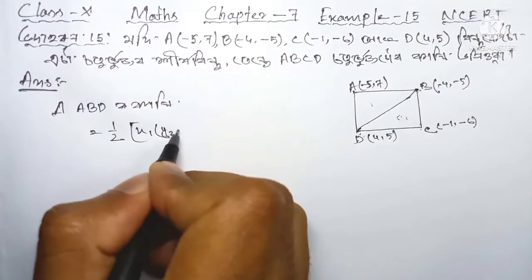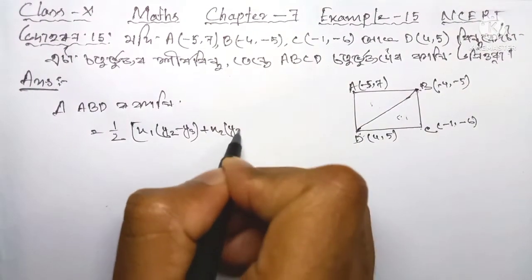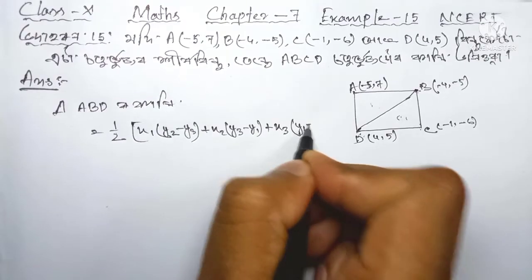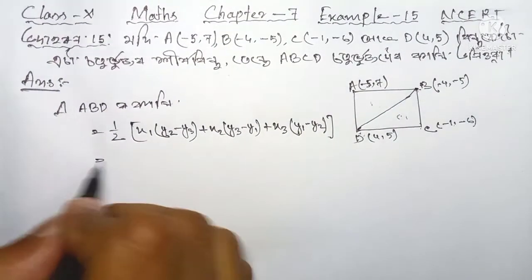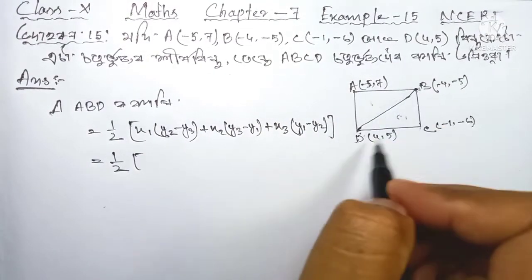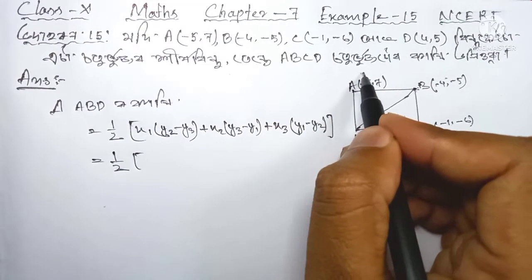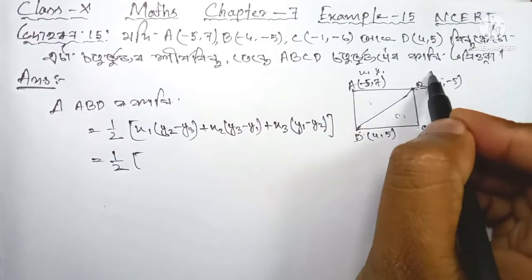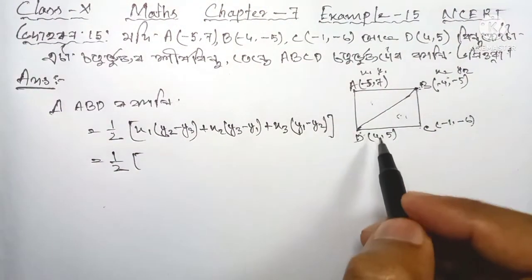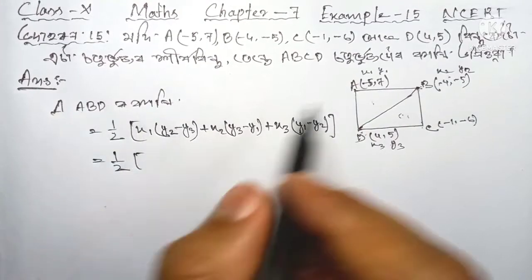The area formula is: x1 into (y2 minus y3) plus x2 into (y3 minus y1) plus x3 into (y1 minus y2). We will use half of this expression. For triangle ABD, we will assign the three coordinates: the first point as (x1, y1), the second point as (x2, y2), and the third point as (x3, y3).